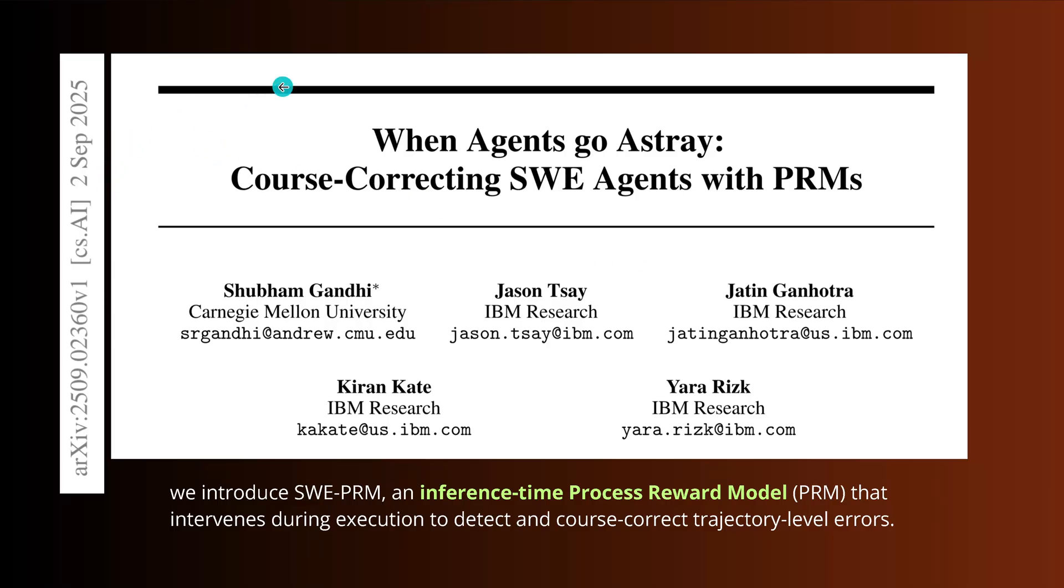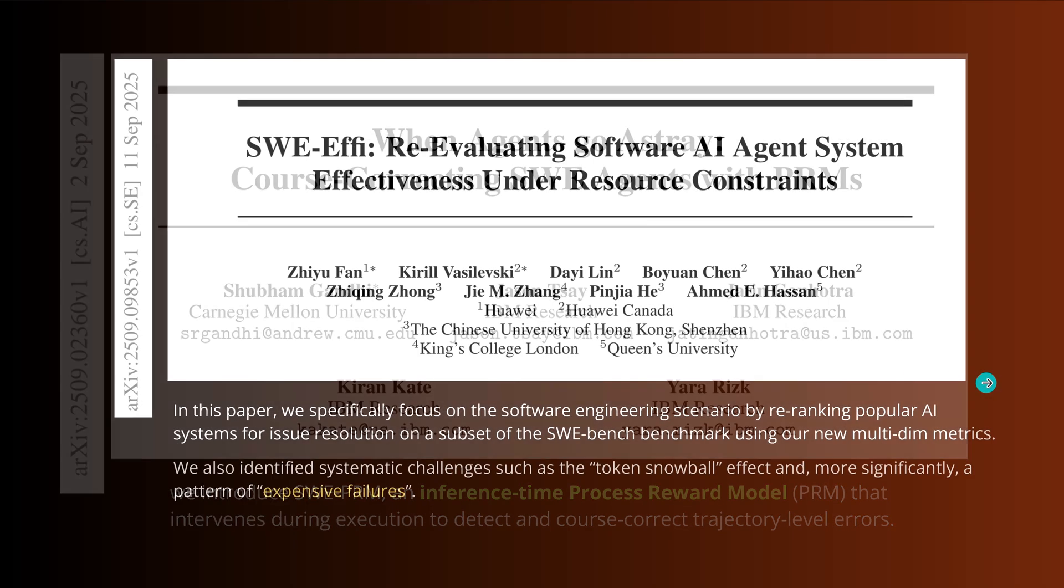But of course, it's not the only study I wanted to show you in this video today, because look here, September 2nd, 2025, when agents go astray, course-correcting SVE agent with also inference time process reward models. So you immediately understand, this is by Carnegie Mellon University and IBM Research, a very nice study. Have a look at this. This is another idea, a very similar idea. Inference time, you say, yes, test time compute, let's go with this. And in this precious 10, 20, 30 seconds that we have, you have a process reward model that you build up to detect and course correct trajectory level errors that happen in your agentic system.